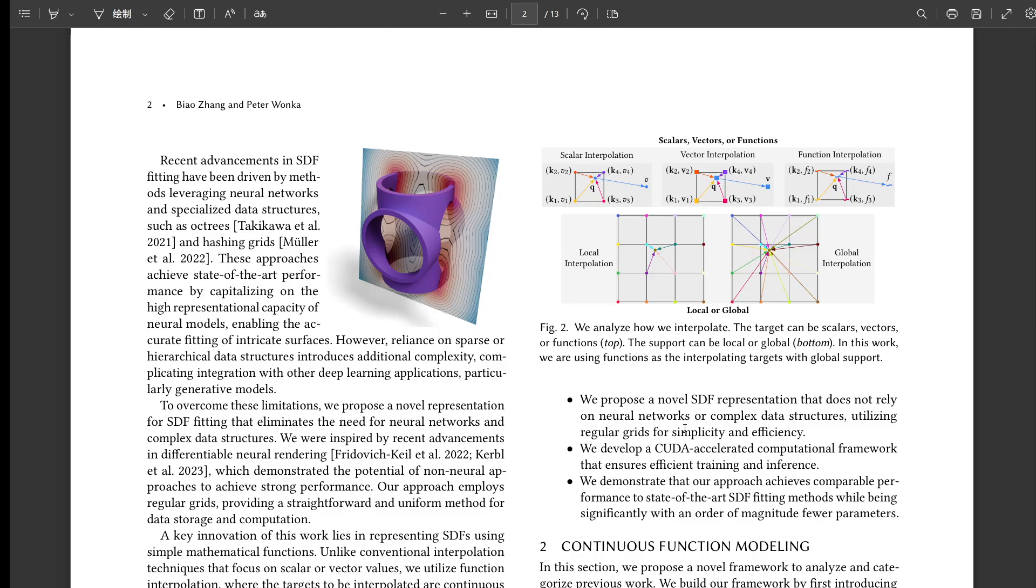The final value at any query point Q comes from blending these functions based on how close Q is to each key. Equation 11 shows this. It's a weighted sum of the outputs of each key's function. Okay, so you're blending whole functions, not just values. How do they figure out the blending weights? They use normalized radial basis functions, RBFs. Specifically, it's a softmax normalized exponential of the negative squared distance between the query point Q and the key. That's equation 10. RBFs are pretty standard for this kind of thing. They give you a nice smooth falloff. Points closer to a key have way more influence.